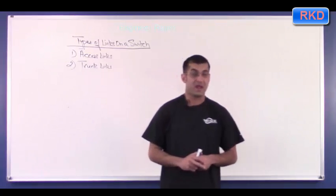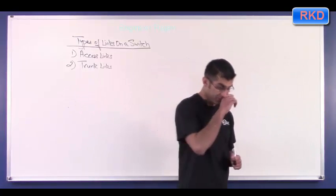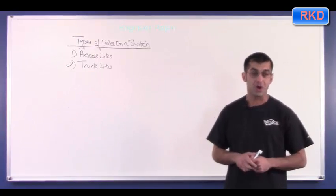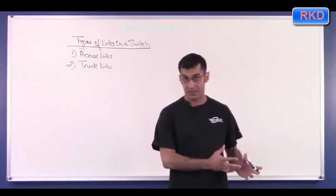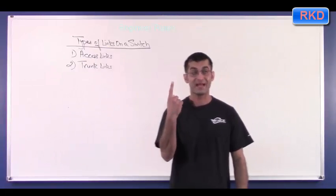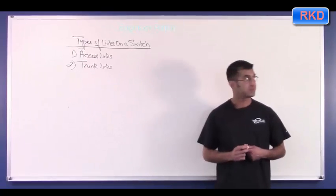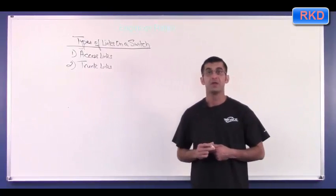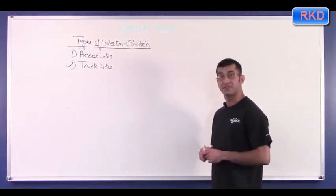So by default, right now, let's say we saw our switches, switch one, switch two, switch three, switch four, by default, you saw that all ports on that switch belong to VLAN one. So all those belong to only one VLAN at a time, the VLAN being VLAN one. All those are access links, or access ports. So access ports belong only to one VLAN at a time.